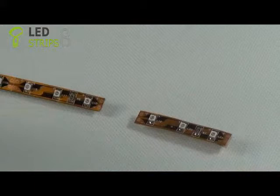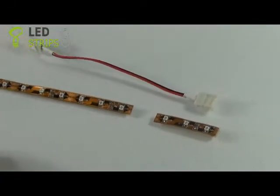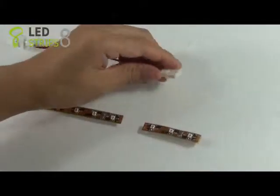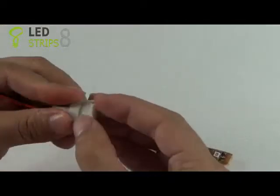Next, we can use a snap-down connector to connect these two short sections. Pick up the snap-down connector and open it.